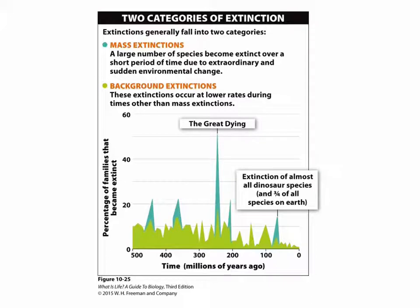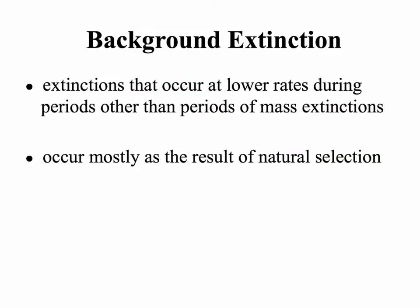Background extinctions occur at lower rates during times other than mass extinctions — every year we lose a certain number of species. We can see from a graph that there have been five mass extinctions in Earth's history. Background extinctions generally result from natural selection: some groups are outcompeted by other groups, either new species or other species moving into areas, which can cause them to go extinct.